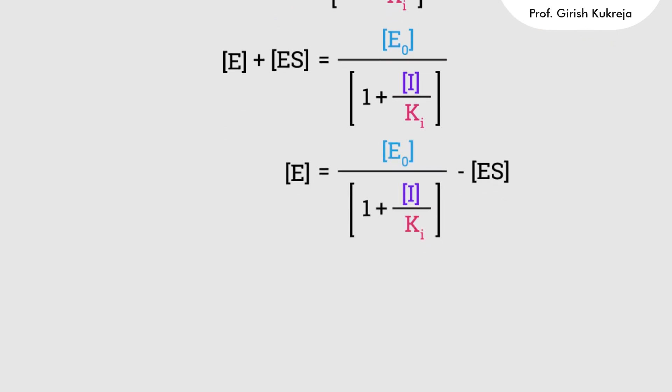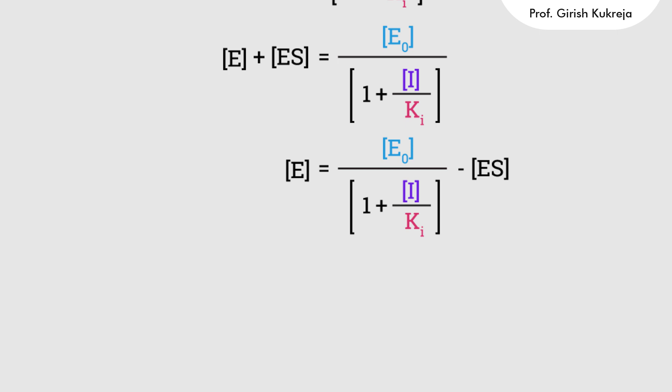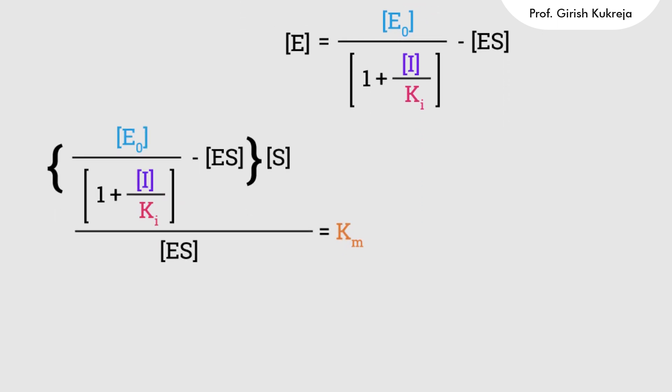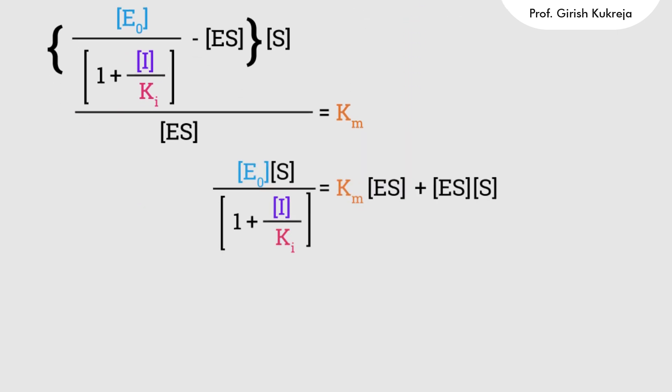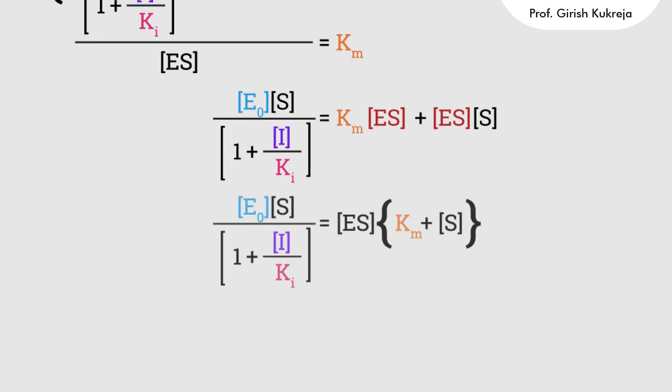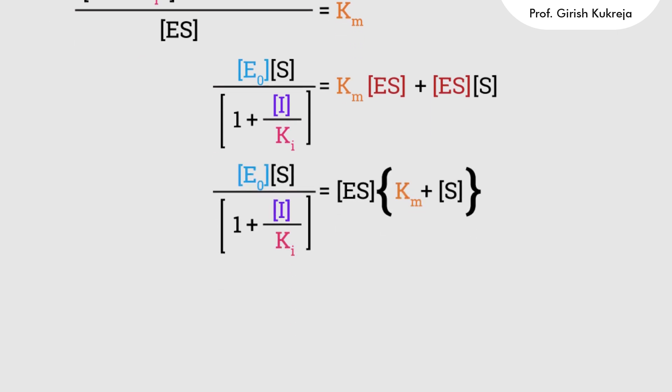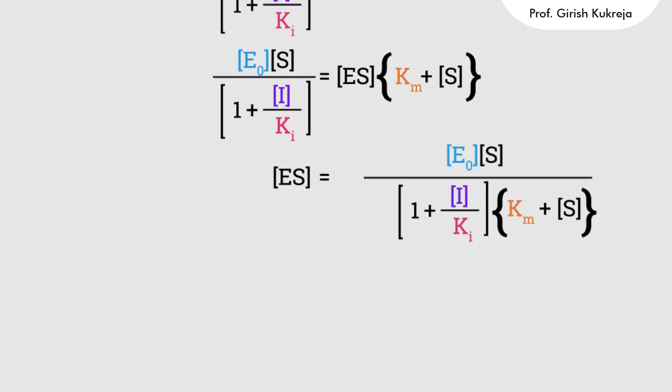Calculating E from this, we have E = E0 / (1 + I/Ki) − ES. Substituting this value of E into the expression for Km, we have [E0 / (1 + I/Ki) − ES] × S / ES = Km. Cross-multiplying, opening the bracket, and taking terms to the right-hand side: E0 × S / (1 + I/Ki) = Km × ES + ES × S. Taking ES common: E0 × S / (1 + I/Ki) = ES × (Km + S). Calculating the value of ES: ES = E0 × S / [(1 + I/Ki) × (Km + S)].